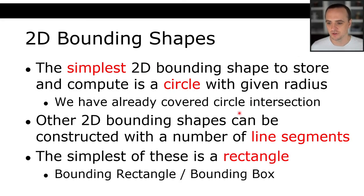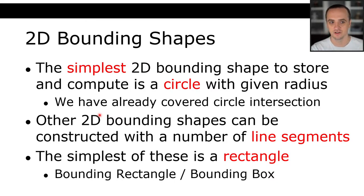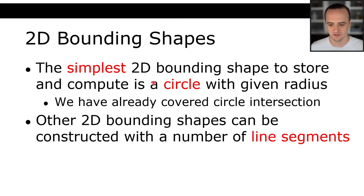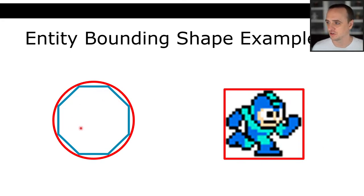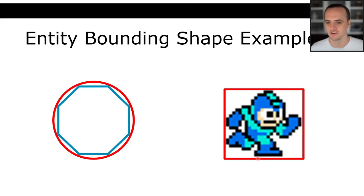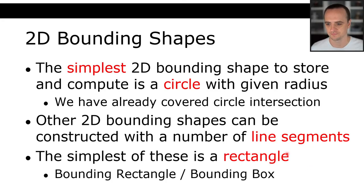The simplest possible bounding box we're going to use to encapsulate arbitrary geometry is going to be a rectangle. It wouldn't really make sense to make Mega Man a circle, because Mega Man runs on the ground and has flat surfaces, so we're going to be using a rectangle for that.